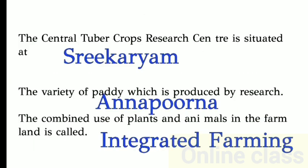The central tuber crops research center is situated at Sri Garya. The variety of paddy produced by research is Hanyapurna. The combined use of plants and animals in the farmland is called integrated farming.